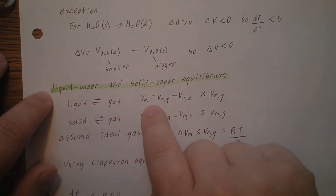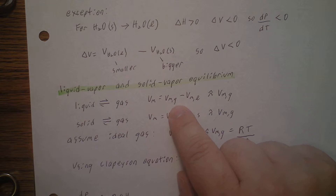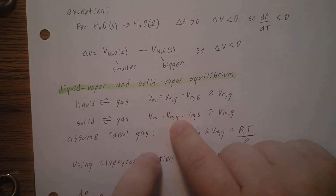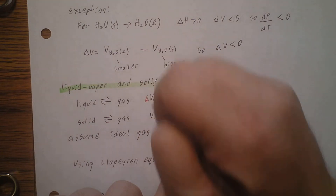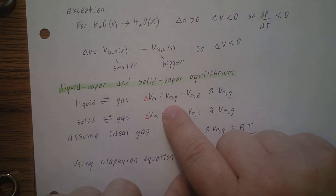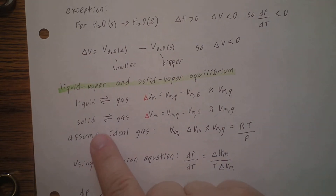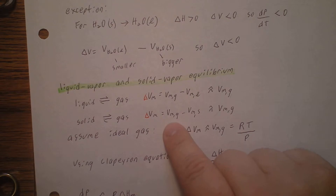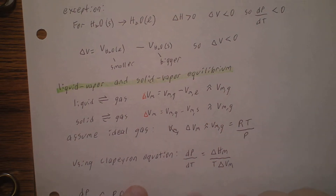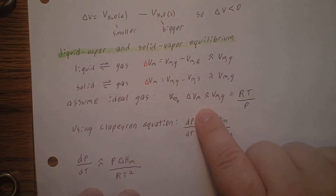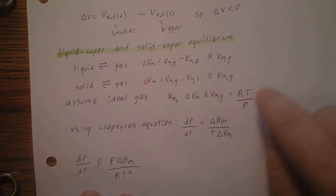Now let's discuss liquid-vapor and solid-vapor equilibrium. For solid in equilibrium with gas, the change in molar volume equals the molar volume of the gas minus the molar volume of the solid. Because the solid is so much smaller than the gas, ΔVm is roughly equal to the molar volume of the gas. Similarly for liquid-vapor. Assuming an ideal gas, the molar volume of the gas is RT/P.